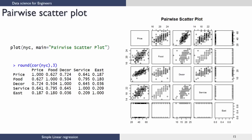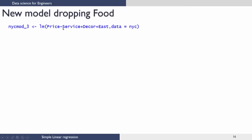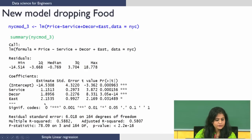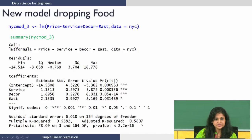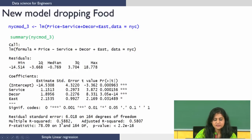Since there was a high correlation between food and service from the scatter plot, let us now retain service and build a model dropping food instead. Looking at this summary, though the p-values show all variables are significant, the R-squared value has dropped from 0.628 to 0.588 — a significant decrease — and the adjusted R-squared has also decreased. This tells us that service is less important, and food explains price in a much better sense than service. The R-squared values and scatter plots suggest we go ahead with the linear model, but we still need to verify the assumptions on the errors using residual analysis, which is left as an exercise.